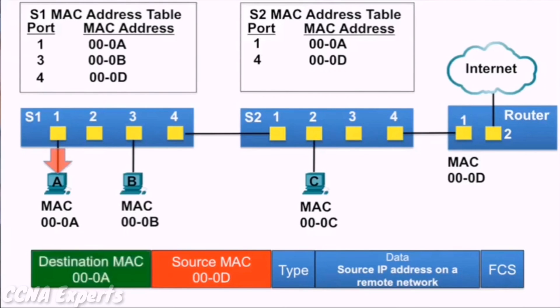PCA examines the destination MAC address, and because it matches its own MAC address, it accepts the rest of the frame.